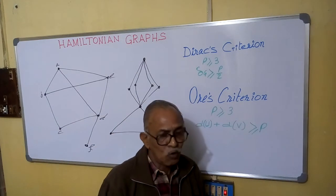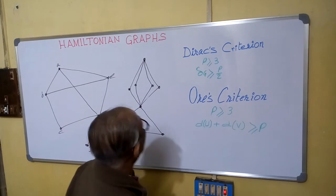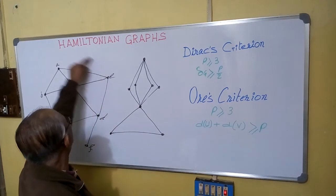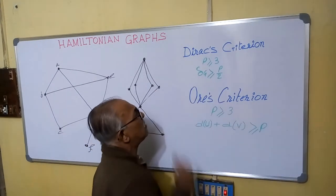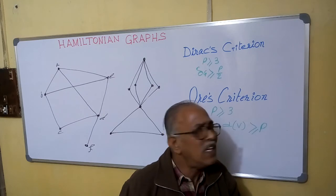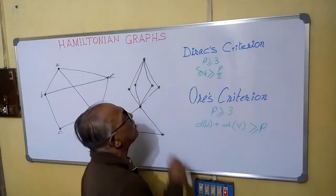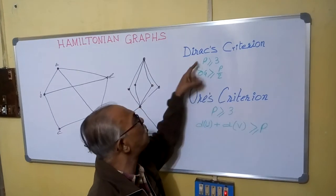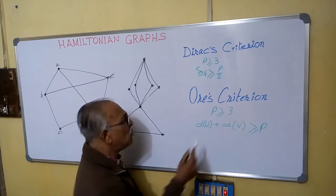Now there are two criteria you have to know. One is called the direct criteria. In a simple graph — a simple graph means there cannot be parallel edges between two vertices — if P, the number of vertices, is greater than 3 and delta(G), the minimum degree of a vertex, is greater than or equal to P divided by 2, then it is a Hamiltonian graph.